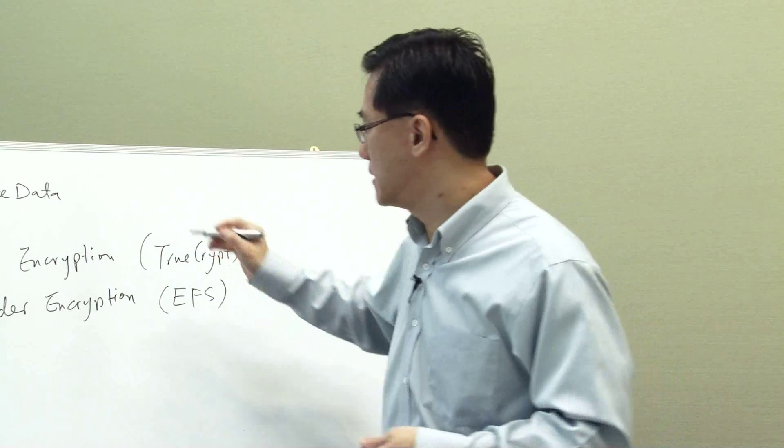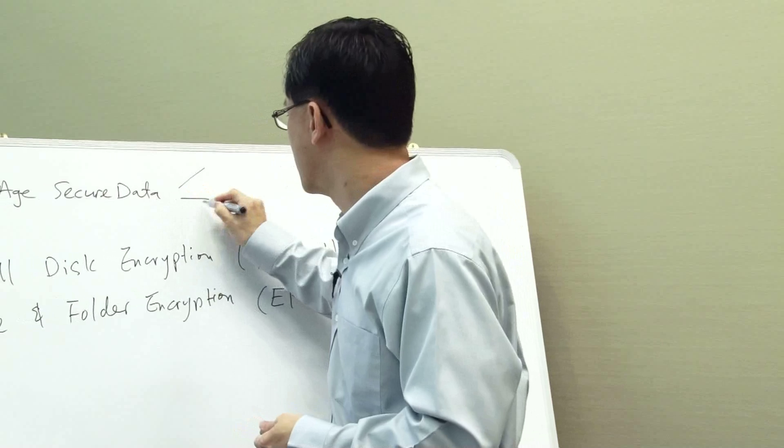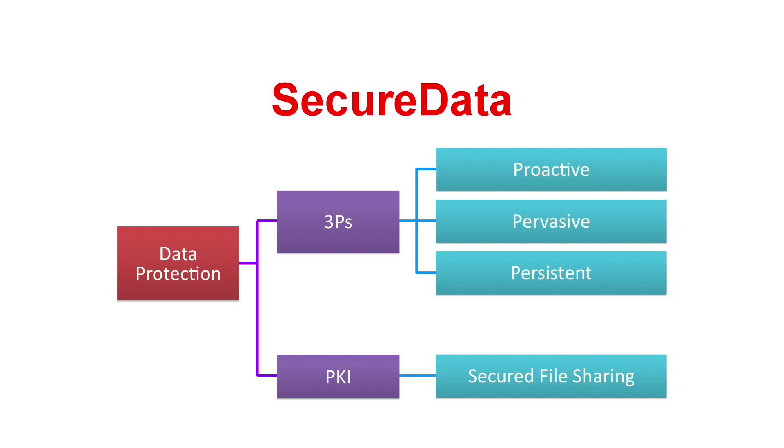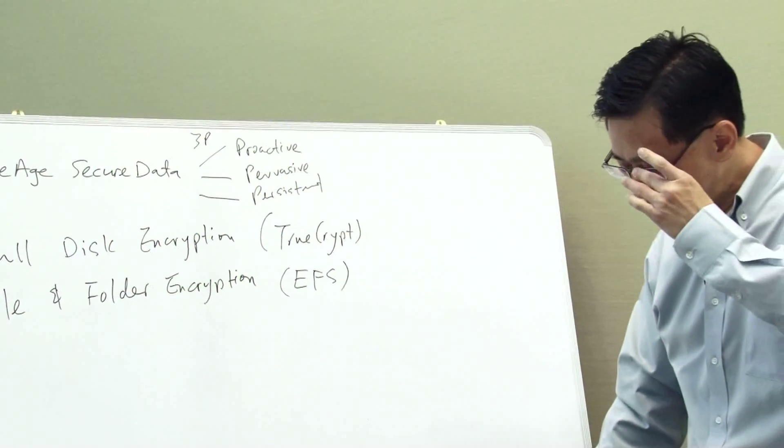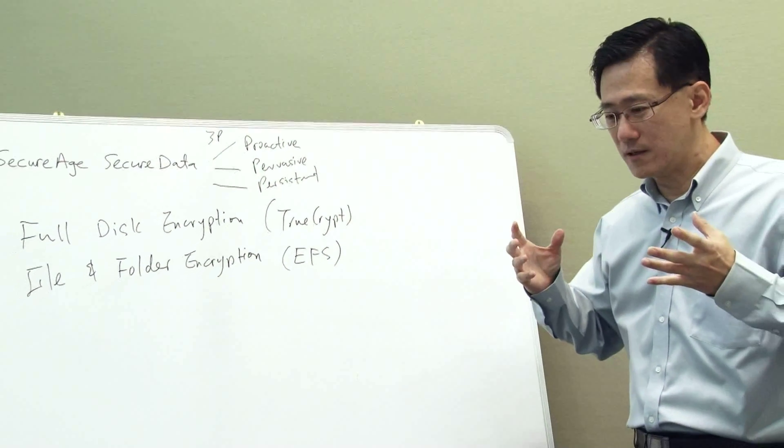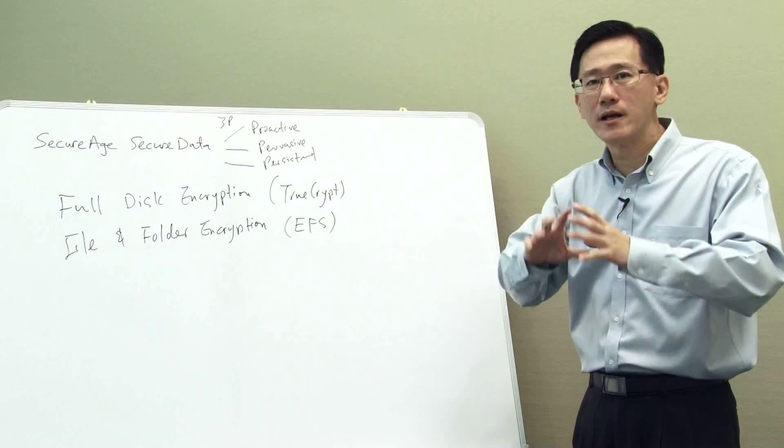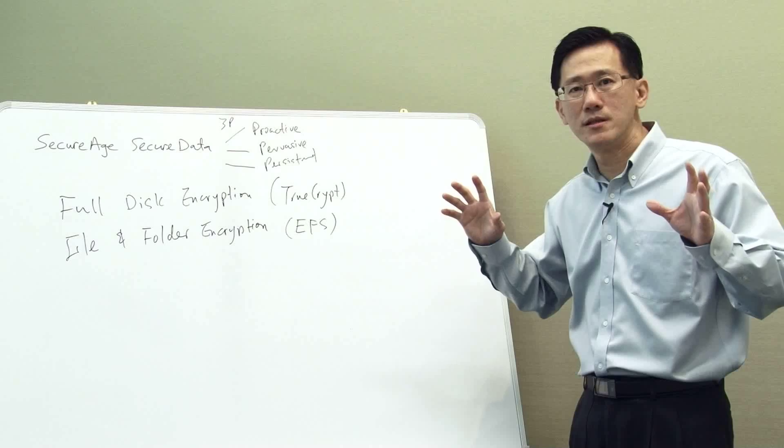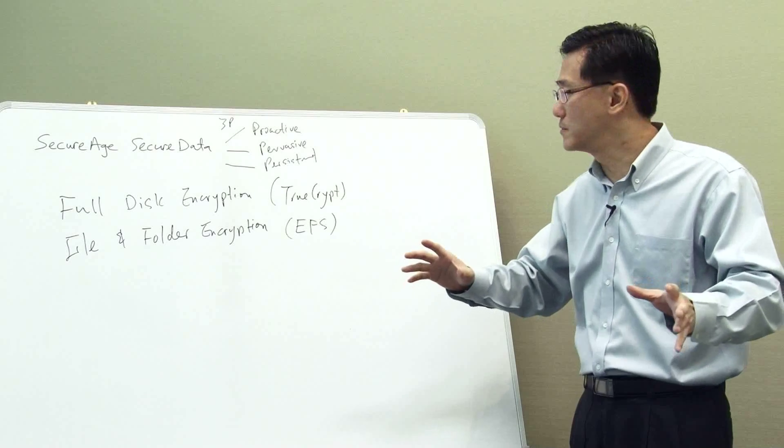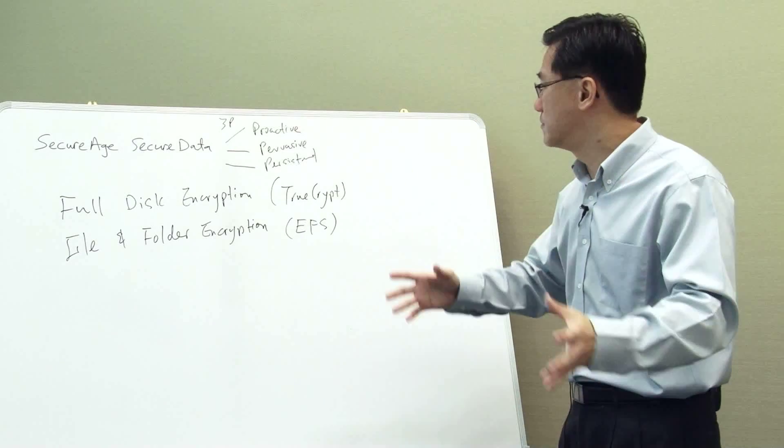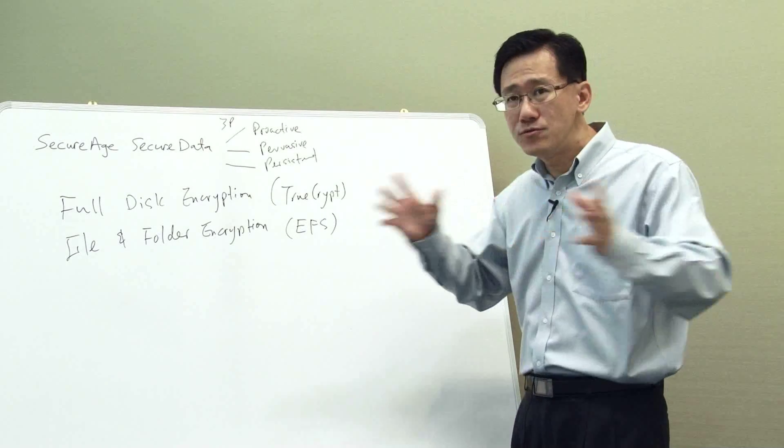The difference between Secure Data and the rest is that it has something we call 3P technology, which is basically three words that start with P. The first one is called proactive, the second one is called pervasive, and the third one is persistent. Proactive basically says that the system, when configured with whatever policy, will automatically encrypt all the data based on the policy in the system. So the default policy is to encrypt everything as I mentioned earlier.